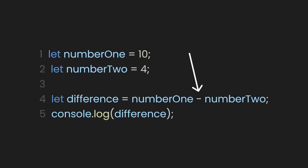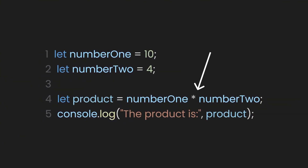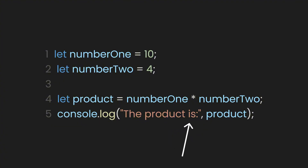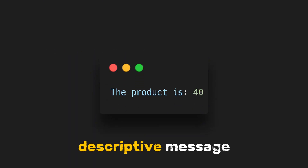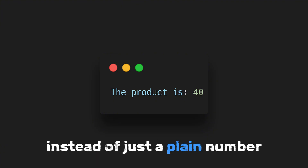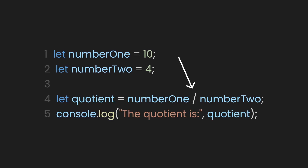To multiply two numbers, we use the asterisk symbol. If you look closely, our `console.log` contains a string. In JavaScript, you can use `console.log` to print multiple items by separating them with a comma — the first item is often a label like a short description, and the second item shows the actual value. So when we check our console, we get a more descriptive message instead of just a plain number. To divide one number by another, we use the slash symbol. Our console will show the quotient, which is 2.5.